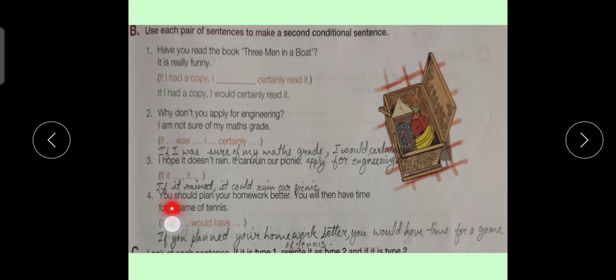Sentence number 4. You should plan your homework better. You will then have time for a game of tennis. Hint is If dash. Dash would have dash. Sentence is If you planned your homework better, you would have time for a game of tennis.